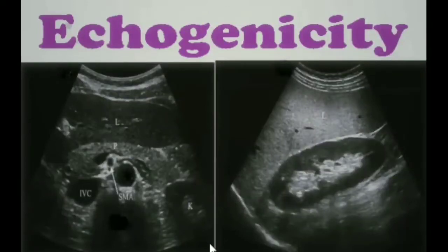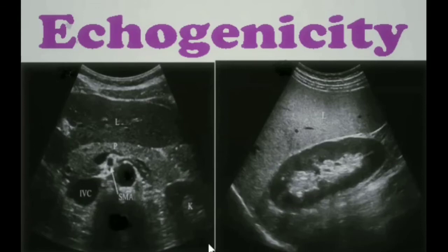Echogenicity describes the echoes produced by an organ and it is a relative term. The organ which produces more echoes is called hyperechoic or more echogenic, while another organ which produces lesser echoes will be called hypoechoic. In ultrasound we are comparing the different tissues with each other and therefore they are labeled as hyperechoic or relatively hyperechoic.